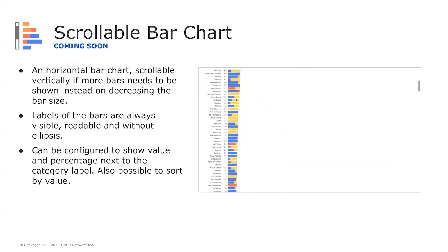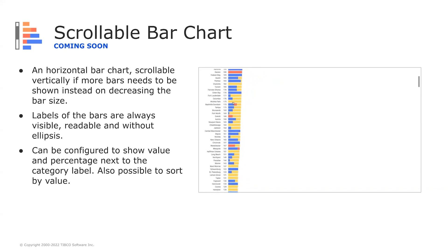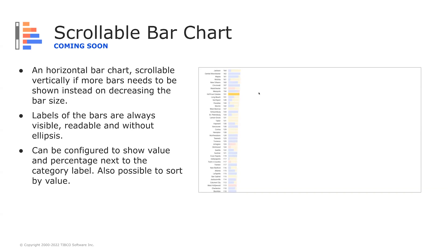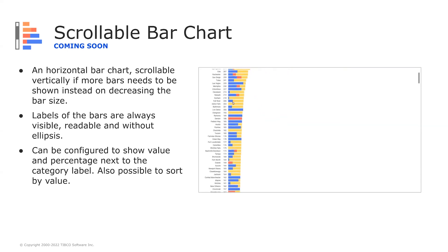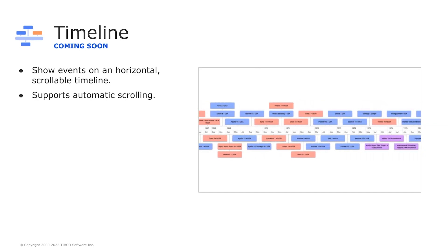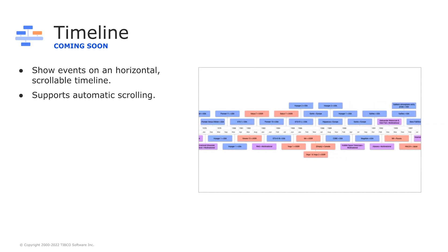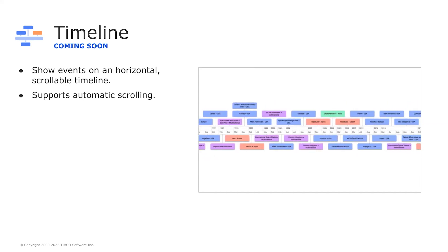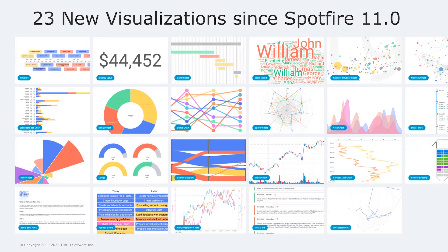Coming very soon, we will have two additional visualizations. The scrollable bar chart looks like a traditional horizontal bar chart, except it is scrollable vertically if more bars need to be shown, with options to show labels for values, percentages, and to sort bars by values. This mod was built and shared by Olga Szymanski. The timeline visualization will also be released very soon — a simple, nice-looking visualization to show events on a horizontal scrollable timeline, with the option to automate the scrolling. This brings us to 23 new visualizations since the release of Spotfire 11 and the MODZ framework, in addition to the standard visualizations built into Spotfire.